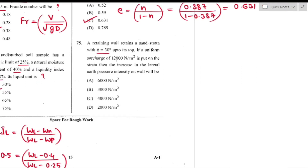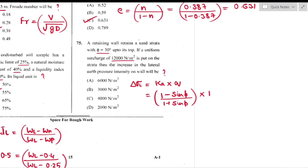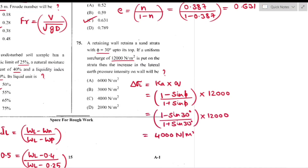Question number 75: Retaining wall retains sand with angle of internal friction φ = 30° and uniform surcharge of 12,000 N/m². Lateral earth pressure intensity = Ka × q. Ka = (1−sinφ)/(1+sinφ) = 1/3. Increase in lateral pressure = 12,000/3 = 4,000 N/m² — option C is the right answer.